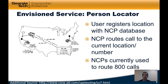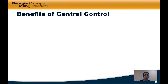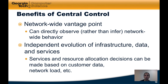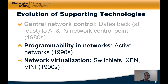NCPs today are currently used to route 800 calls in a very similar fashion. To summarize, the benefits of central control for the NCP and the phone network were that a single network-wide vantage point could allow operators to directly observe rather than infer network-wide behavior, and importantly, to evolve the infrastructure, data, and services independently from one another. That's a summary of where central network control came from, and next we'll look at the history of programmability in networks as well as the history of network virtualization.